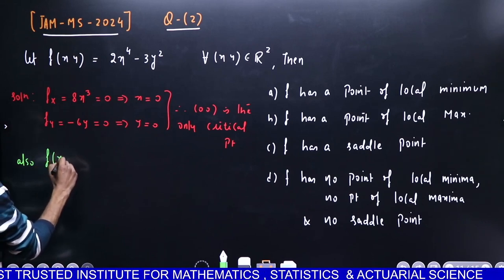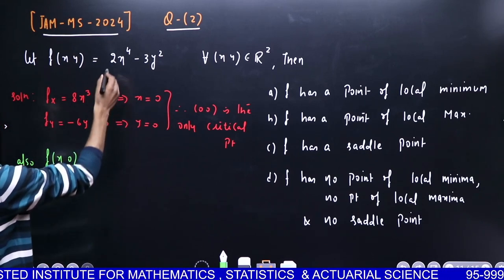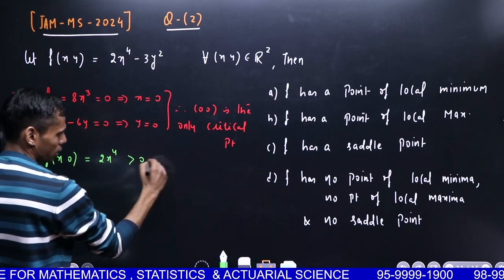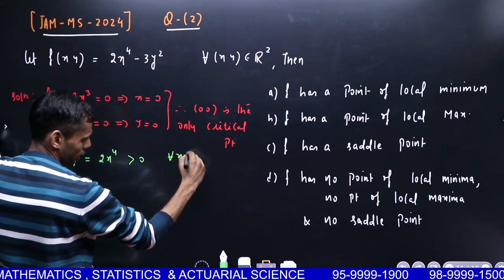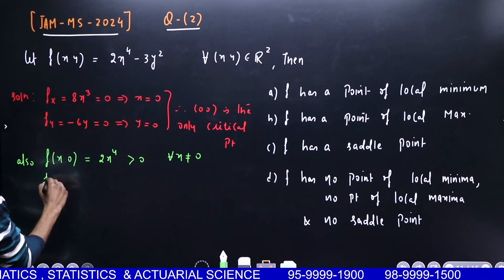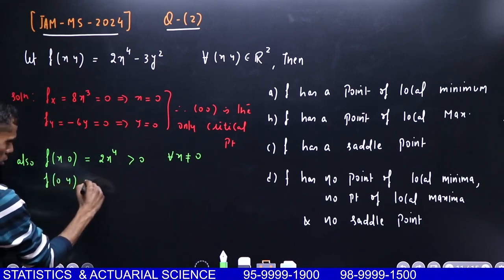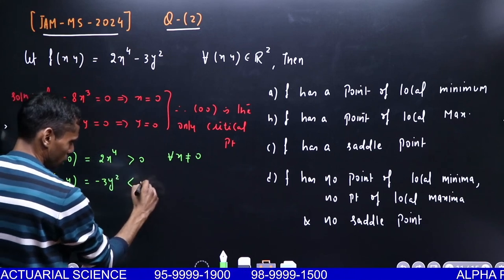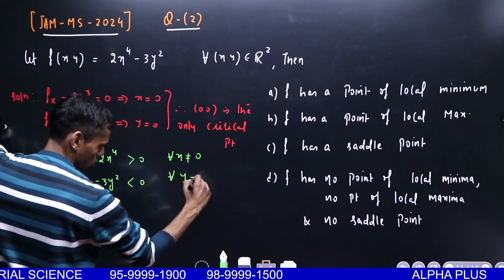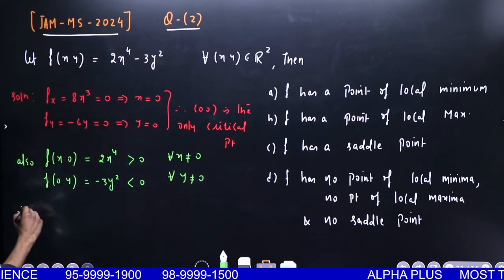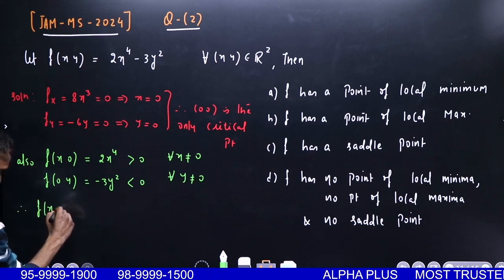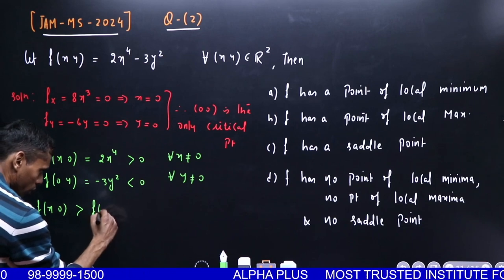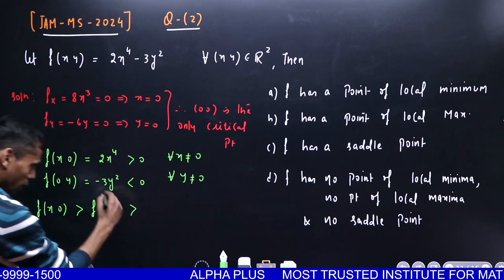What is f(x,0)? That is 2x⁴, which is always greater than 0. And f(0,y) is -3y², which is always negative when y is non-zero.